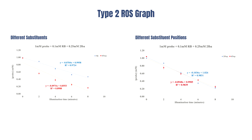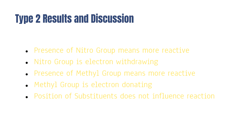On the left, we see that the presence of a methyl group once again increased the rate of reaction, and on the right, we see that changing the position of the substituent groups does not influence the rate of reaction at all. Overall, when comparing all the samples, we learned that the presence of a nitro group meant that it was more reactive, because the nitro group is electron withdrawing. We also see that the presence of the methyl group meant that it was more reactive. This may seem a little backwards — electron withdrawing being more reactive and electron donating being more reactive — but specifically the methyl group provided a pair of electrons to form a new covalent bond, and this helped increase the reactivity with ROSs.